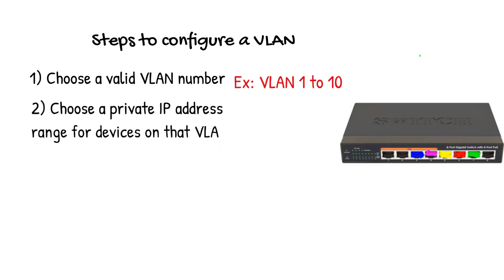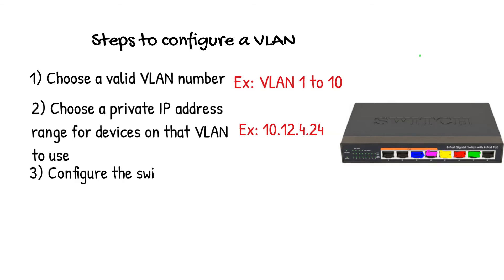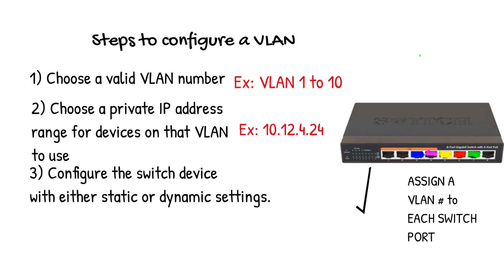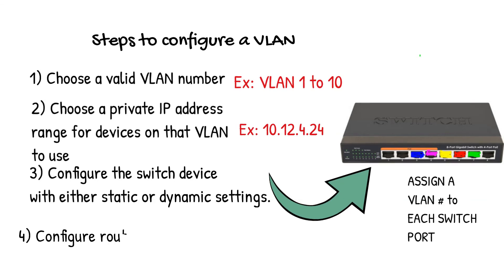In static configurations, the administrator assigns a VLAN number to each switch port. In dynamic configurations, the administrator assigns a list of MAC addresses or usernames to a VLAN number. Finally, configure routing between VLANs as needed — configuring two or more VLANs to communicate with each other requires the use of either a VLAN-aware router or a Layer 3 switch.